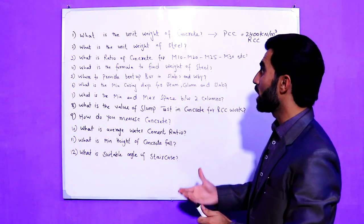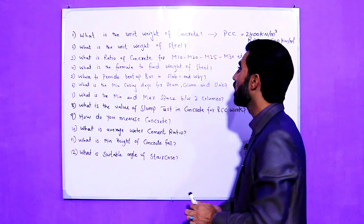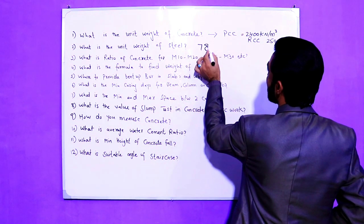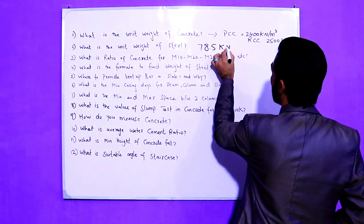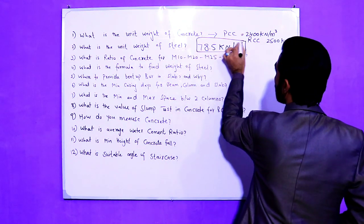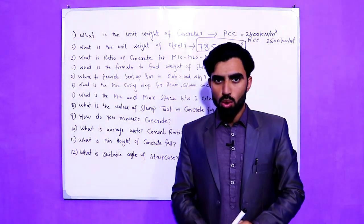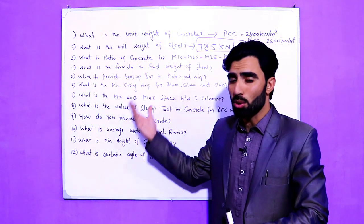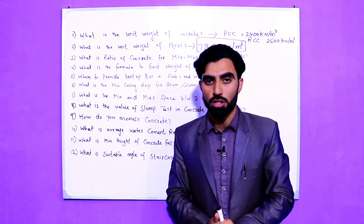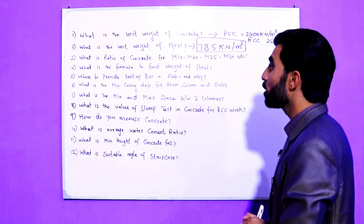The second question is also very important: what is the unit weight of steel which we use in construction work? The answer is 78.5 kilonewton per meter cube. This is the density of steel. You should answer shortly — just say 78.5 kilonewton per meter cube.